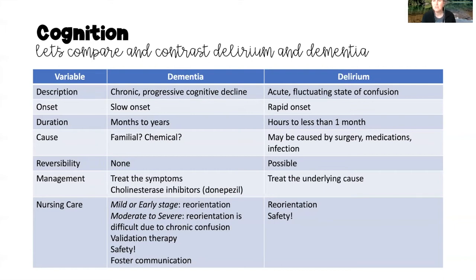Delirium is an acute and fluctuating state of confusion. The onset for dementia is slow — it can take months to years to reach its full severity. Delirium, on the other hand, has a rapid onset, anywhere from hours to less than a month for that acute fluctuating state of confusion to develop.